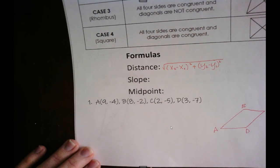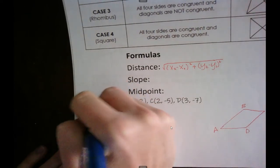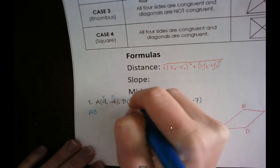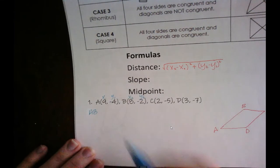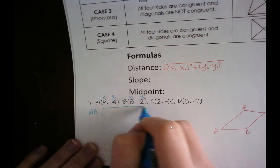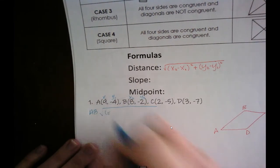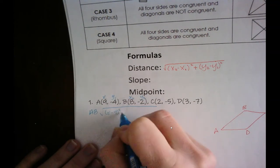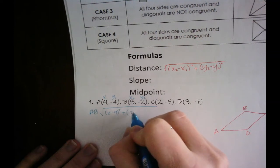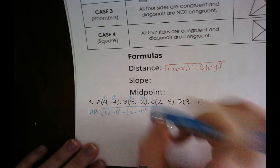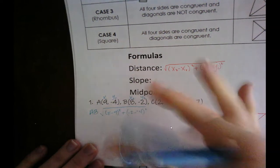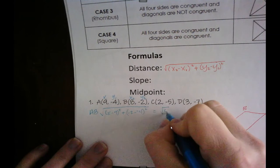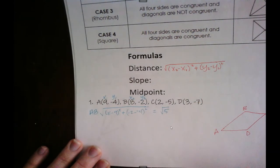So we're going to go from A to B. We'll label these x₁, y₁, x₂, y₂ and take the square root of (x₂ minus x₁) squared plus (y₂ minus y₁) squared. That gives us the square root of (8 minus 9) squared plus (negative 2 minus negative 4) squared. I'm going to leave this as the simplified version.